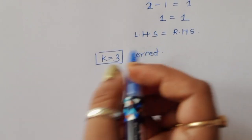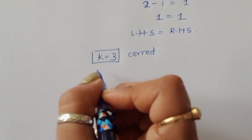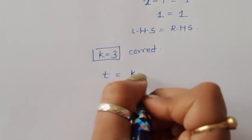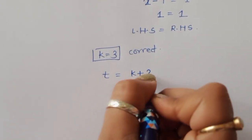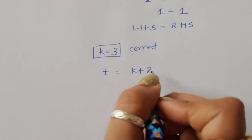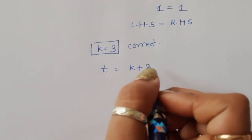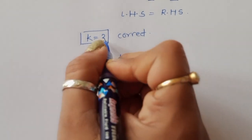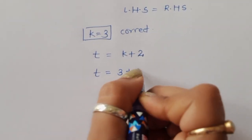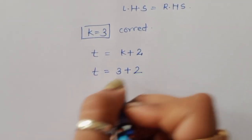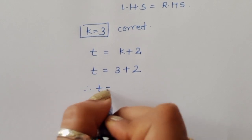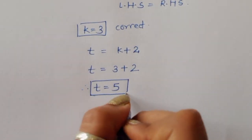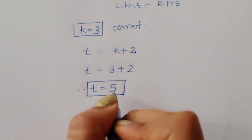We already established that t equals k plus 2. Substituting k equals 3: t equals 3 plus 2. Therefore, the value of t is equal to 5.